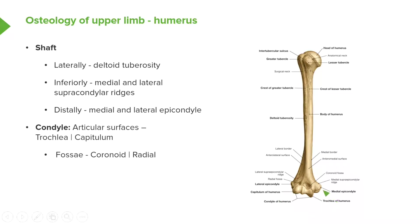The humerus dilates into two condyles which form the articular surfaces that articulate with the radius and the ulna, forming the elbow joint. There are two articular surfaces: we have the trochlea medially and the capitulum laterally. The radius is going to articulate with the capitulum, and the ulna is going to articulate with the trochlea of the humerus, forming two important articulation sites.